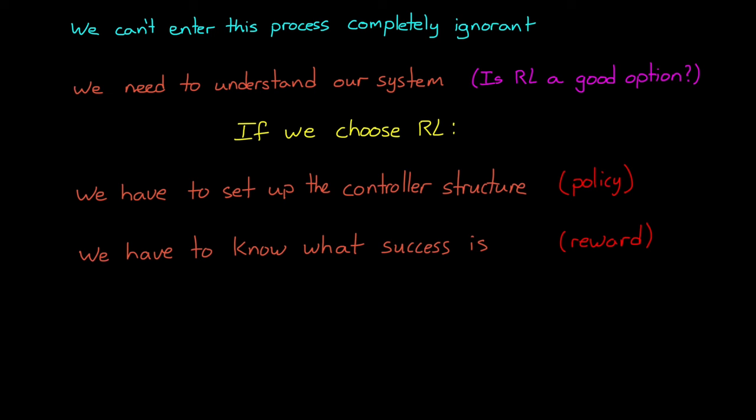We also need to know what a successful result would be, and reward the controller for doing well. This requires crafting a reward function so that the learning algorithm understands when it's getting better and ultimately settles on the result that you're actually looking for.